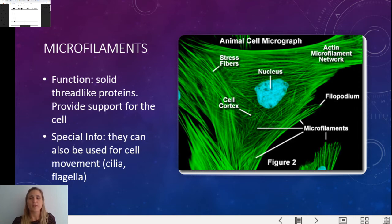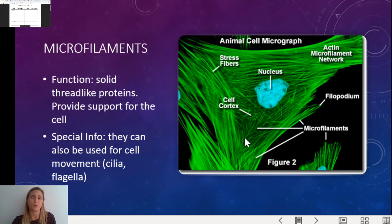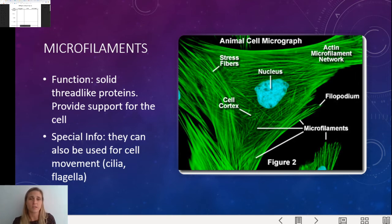On to microfilaments. Microfilaments are basically structural support for the cell — they can hold things together inside the cell. They're like little threads, like a net almost, and they're made out of protein to provide support. Microfilaments can also be used for cell movement. When we look at pond water, you can see that some cells have things called cilia or flagella — like tails or little hairs that allow them to move — and those are made of microfilaments. So they're used for structure and, in some cells, for movement.